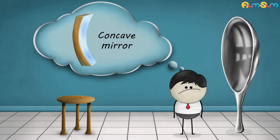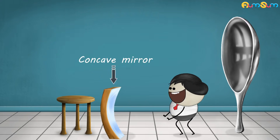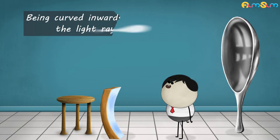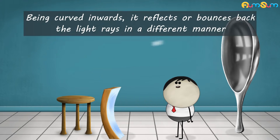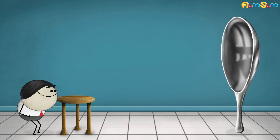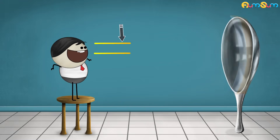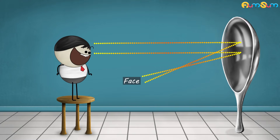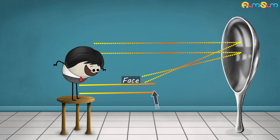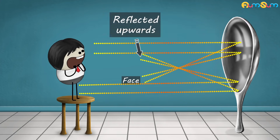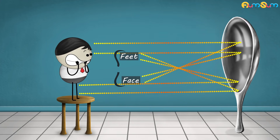You look confused — let me explain. A concave mirror is a mirror whose reflecting surface is curved inwards. Being curved inwards, it reflects or bounces back the light rays in a different manner. When you see yourself in a spoon, which is like a concave mirror, the light rays from your face fall on the top of the spoon and get reflected downwards. While the light rays from your feet fall on the bottom of the spoon and get reflected upwards. As a result, you see yourself upside down.